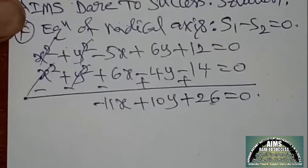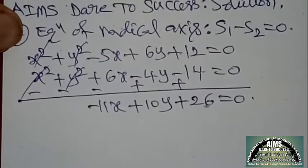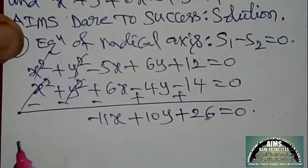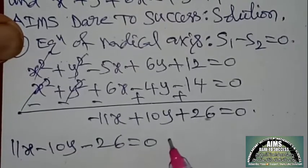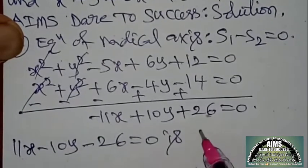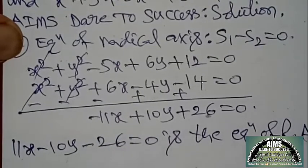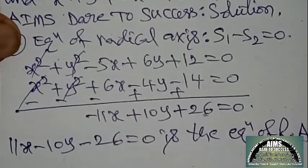If you want to take minus as common factor, after taking minus common: 11x − 10y − 26 = 0 is the equation of the radical axis. I hope you understand, my dear students.